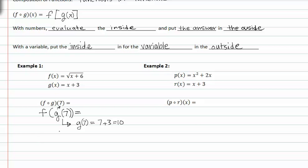Since we know that g of 7 is equal to 10, we can now rewrite this as f of 10. If we want to evaluate f of 10, we simply put 10 into the function square root of x plus 6, in for x. So now we have f of 10 is equal to the square root of 16, or f of 10 is equal to 4.